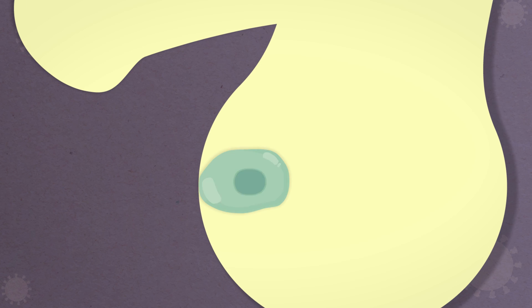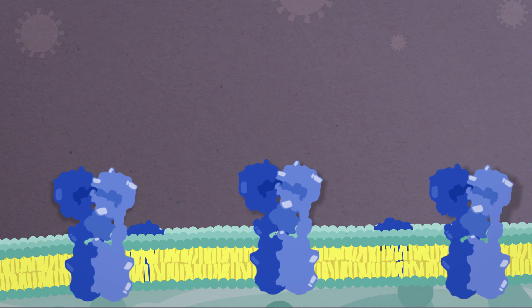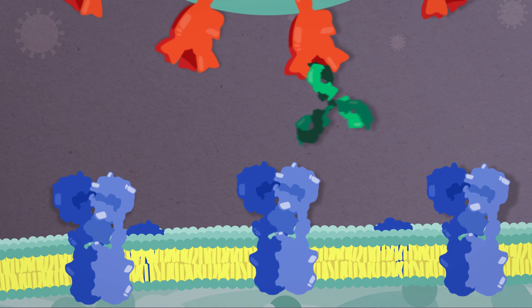Antibodies to the novel coronavirus recognize the virus's outer spike protein, enabling them to bind to the surface of the virus, preventing the virus particles from attaching to the host cell.